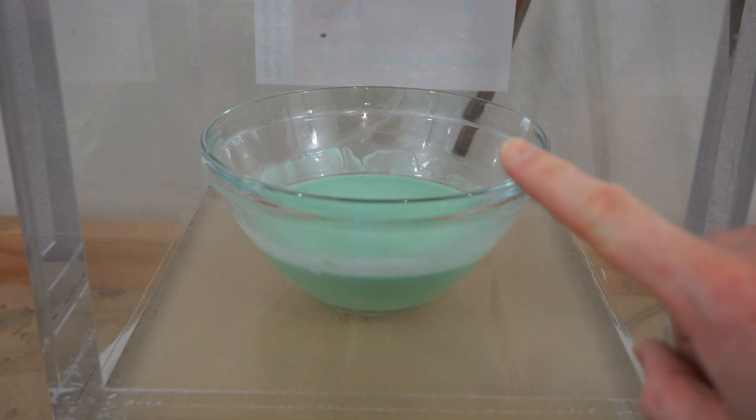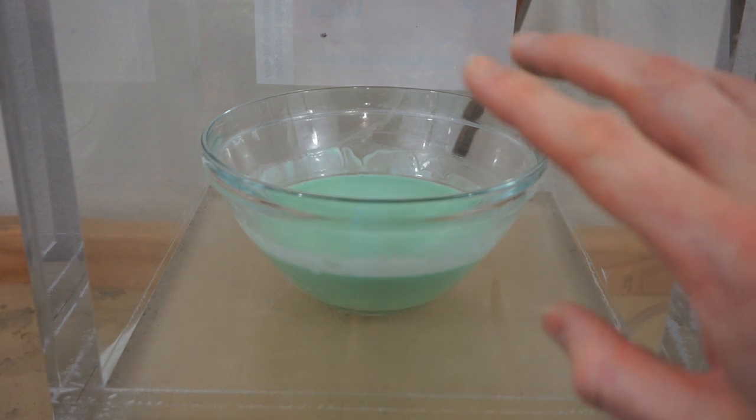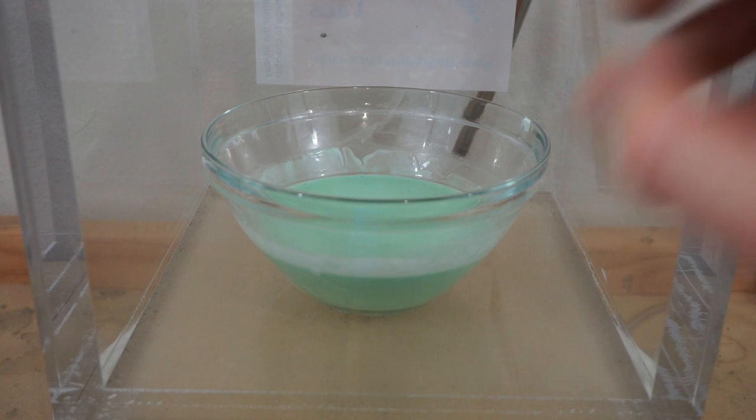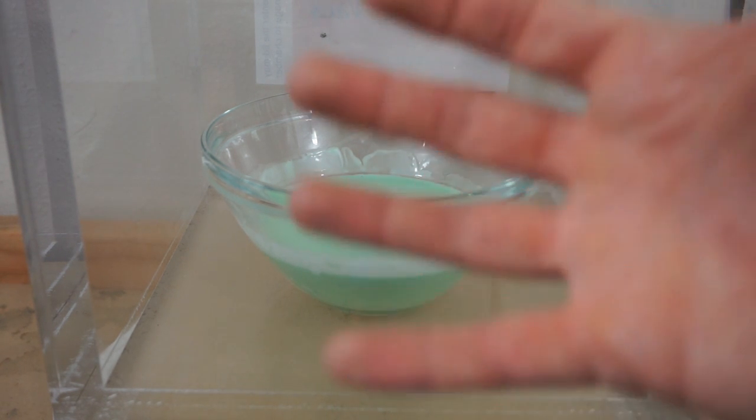Okay so this should be pretty cool to see because normally if you want to boil Oobleck, as soon as you heat it up, the starch starts to coagulate and it thickens and it becomes just this glob.